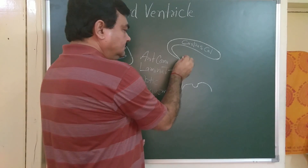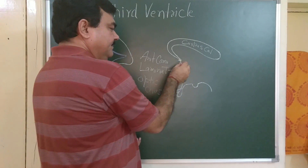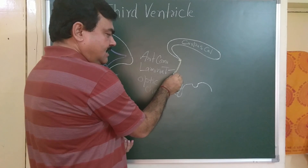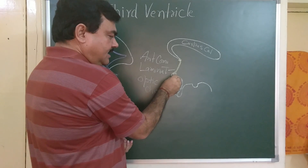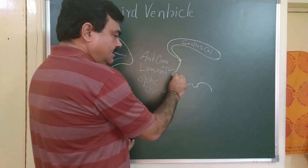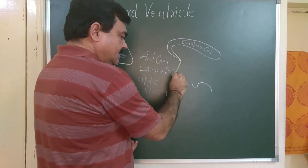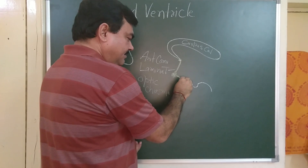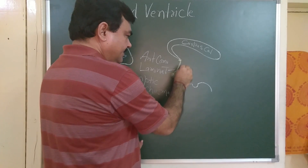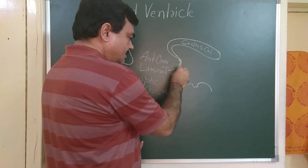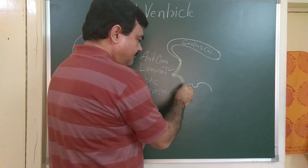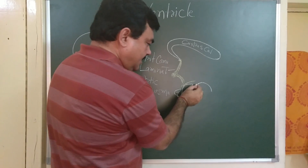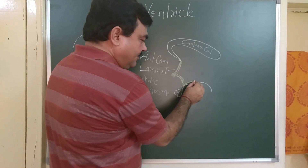To summarize the anterior floor structures: this is the anterior commissure, this is the lamina terminalis, here is the optic chiasma, here is the tuber cinereum, and this is the infundibulum or pituitary stalk. Here is the mammillary body.